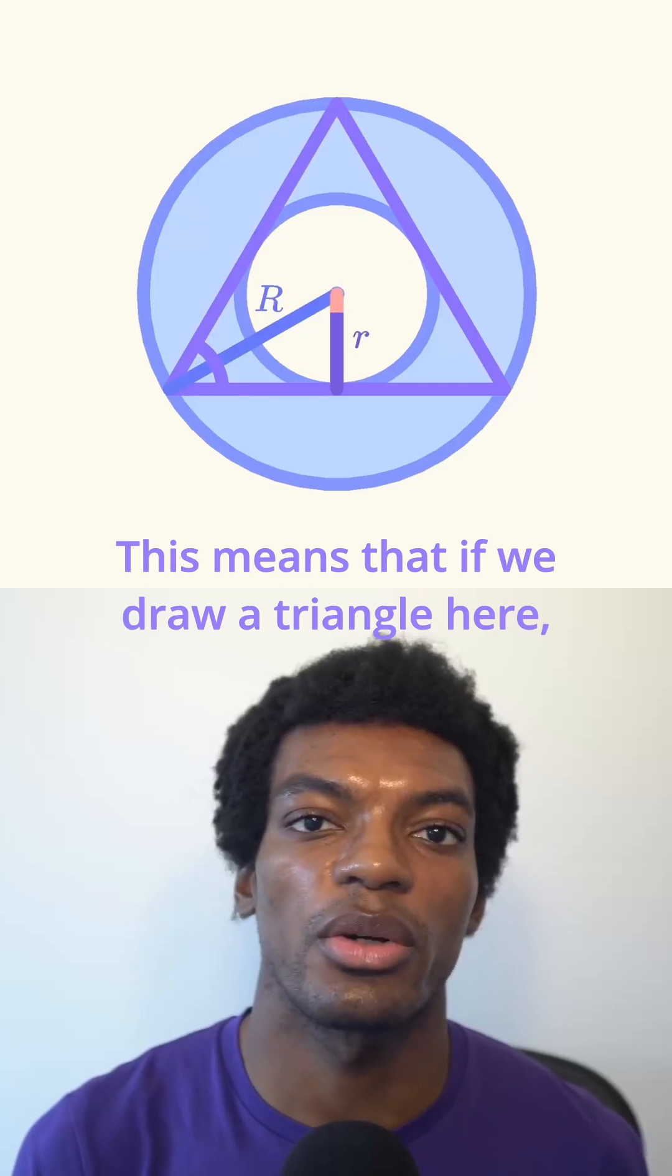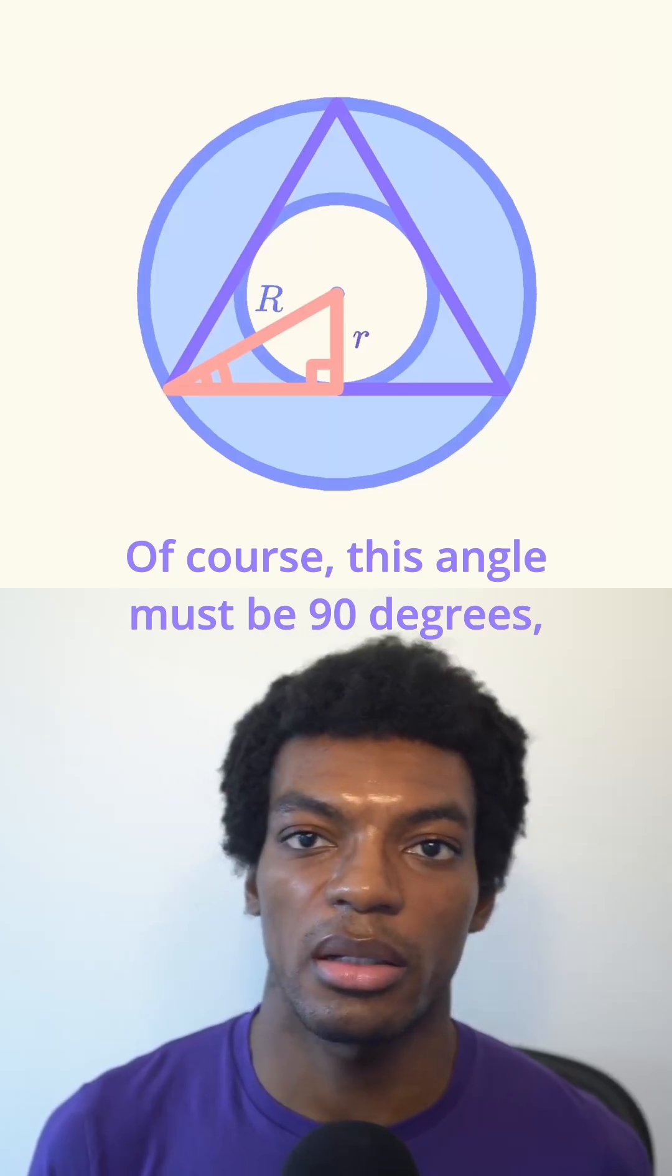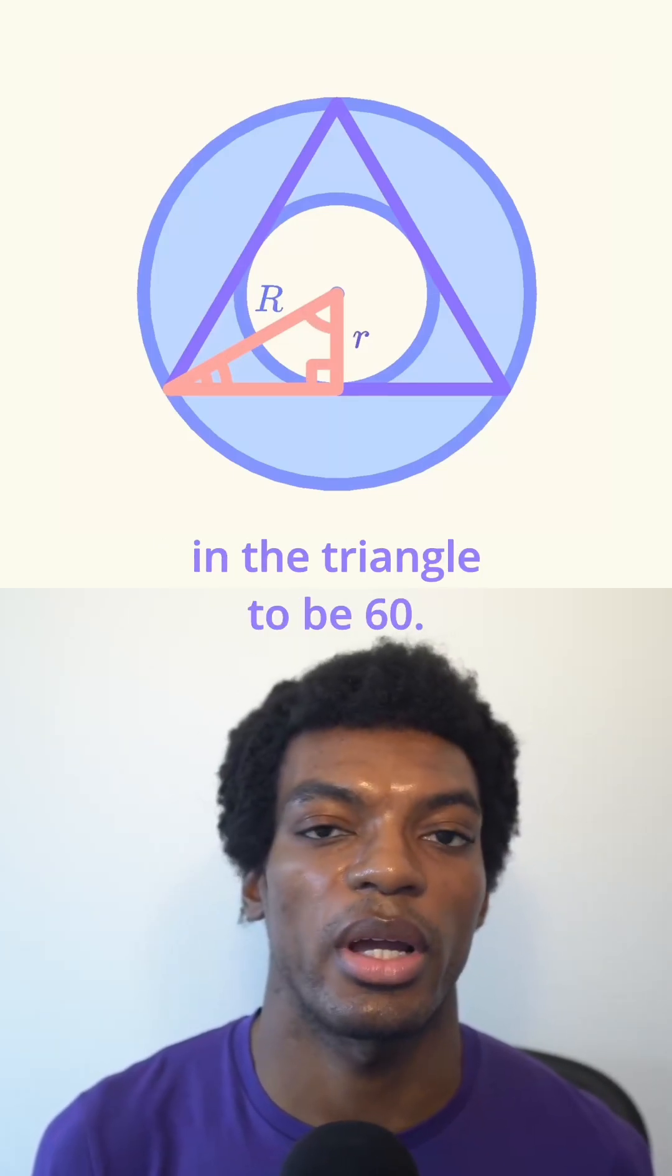This means that if we draw a triangle here, this angle must be 30 degrees. Of course, this angle must be 90 degrees, leaving the other angle in the triangle to be 60 degrees.